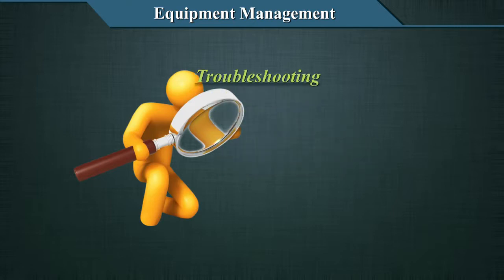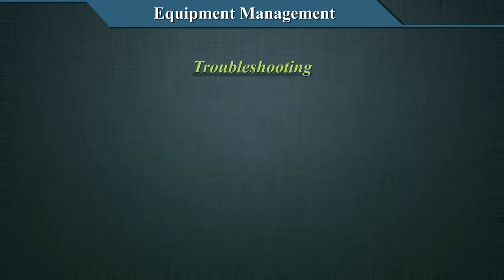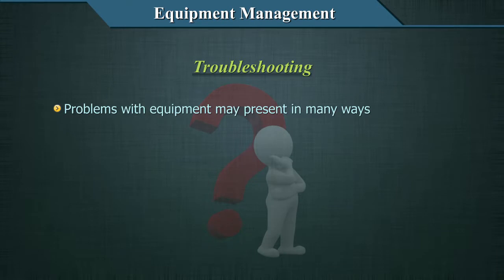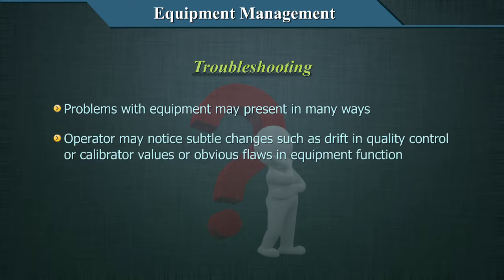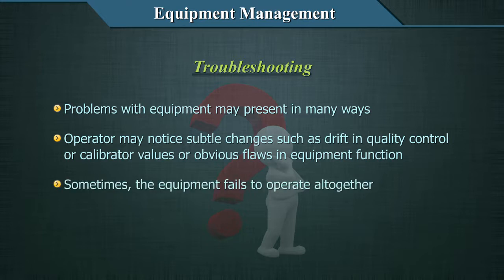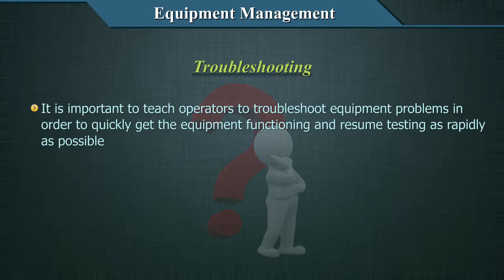This is a very important concept in equipment management. Problems with equipment may present in many ways. The operator may notice subtle changes such as drift in quality control or calibrator values, or obvious flaws in the equipment function. Sometimes the equipment fails to operate altogether. It is important to teach operators to troubleshoot equipment problems in order to quickly get the equipment functioning and resume testing as rapidly as possible.